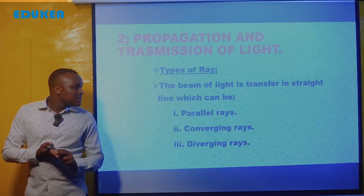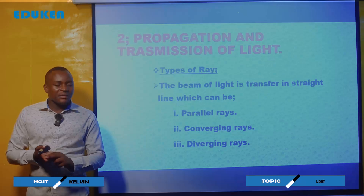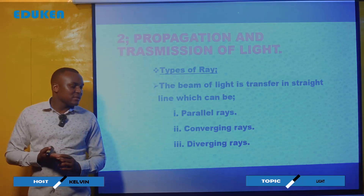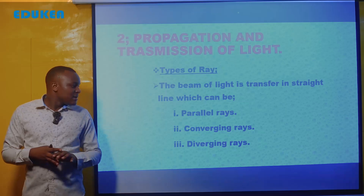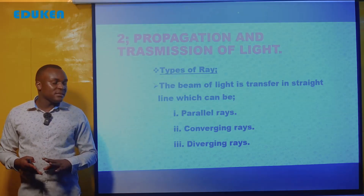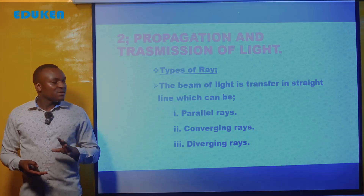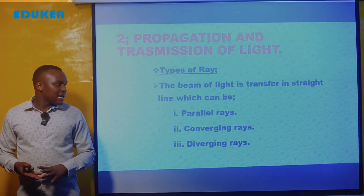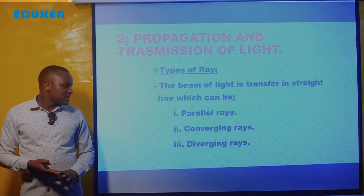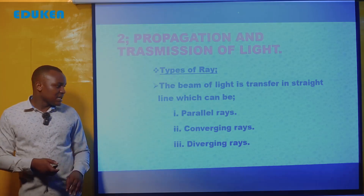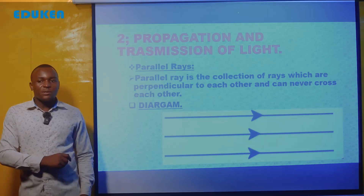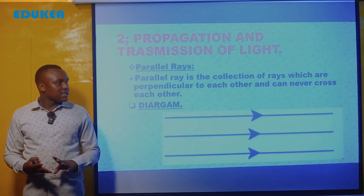Rays of light can be in three ways. The first way is in a parallel way, the second way is in a converging way, and the last one is in a diverging way. So there are parallel rays, converging rays, and diverging rays — and we will look at them one after another, starting with parallel rays.